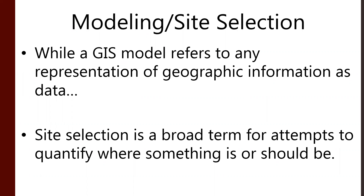Let's finish off this module with some discussion on modeling. We talk about GIS models a lot — I'd love to hear about what kind of GIS models, workflows, or interpolation methods you'd like to hear more about. Feel free to get in contact. Anything in GIS is a GIS model, whether it's a shapefile, a digital elevation model, a site selection model, or an interpolation model. All of these components represent how we abstract the real world into the geospatial world. Site selection or modeling is a specific term referring to attempts to quantify where something is or should be.